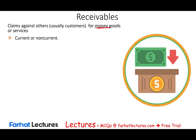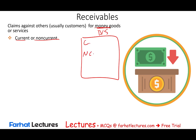A receivable could be current or non-current. On the balance sheet, we have to classify our assets as either current or non-current. Generally speaking, all trade receivables — receivables as a result of providing goods or services, which is accounts receivable — are usually current. We could have a non-current receivable when we provide a loan or money to others, called notes receivable, which could be current or non-current.